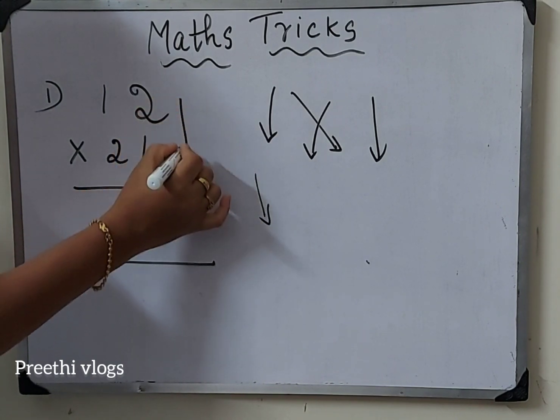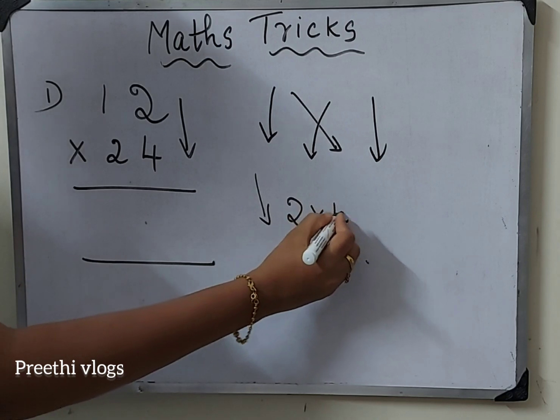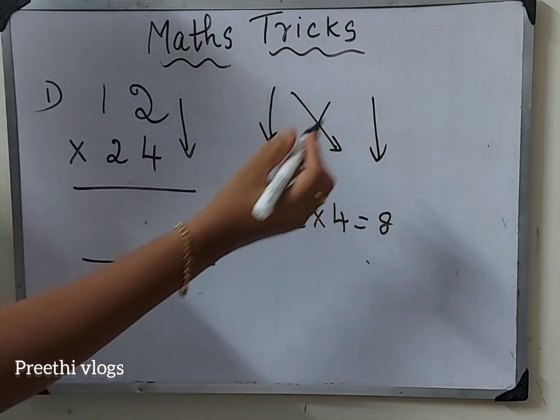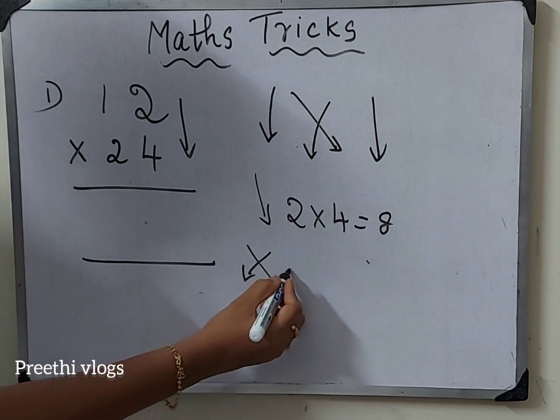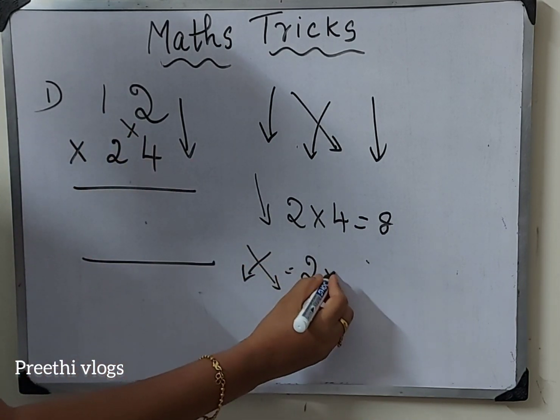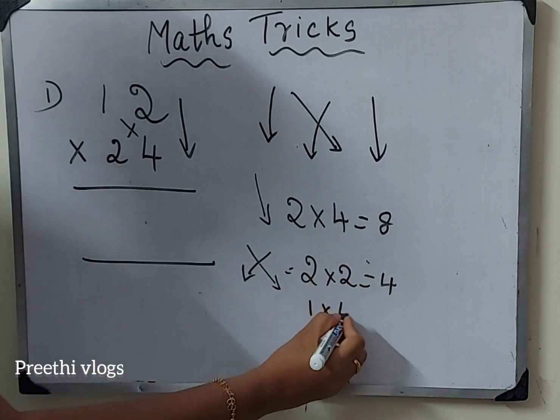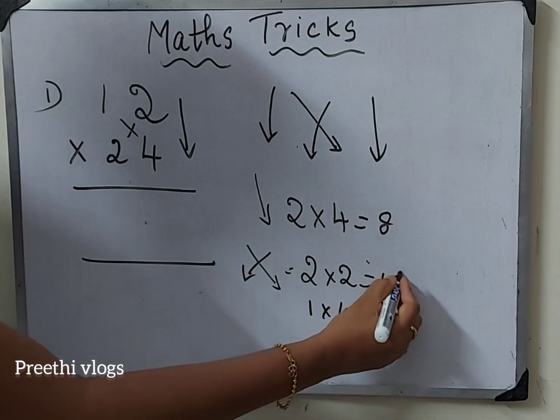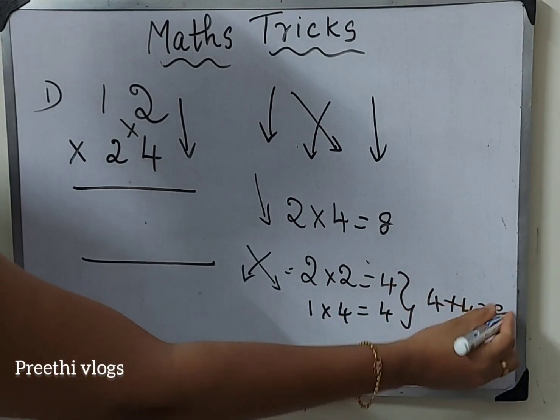First moment is down arrow mark. Left side numbers 2 and 4, so 2 into 4 is 8. Next cross - 2 into 2 and 1 into 4. 2 into 2 equal to 4 and 1 into 4 equal to 4. Add them: 4 plus 4 equal to 8.